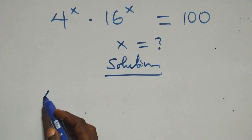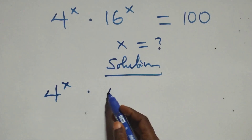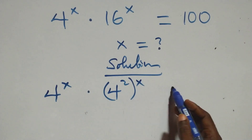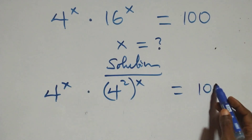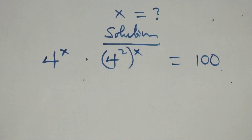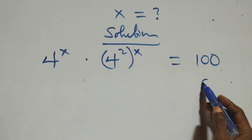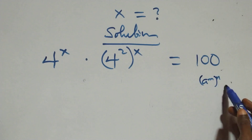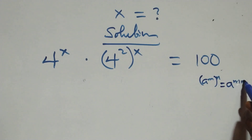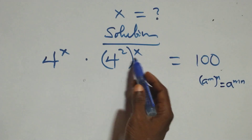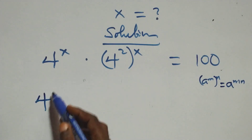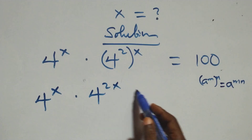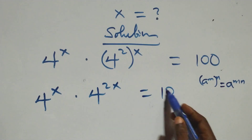We can write this as 4 raised to the power x times 16 as 4 squared, which is raised to the power x equals to 100. This follows when we have a raised to power n raised to power m, we write this as a raised to power n·m. So 4 raised to power x times 4 raised to power 2x equals to 100.